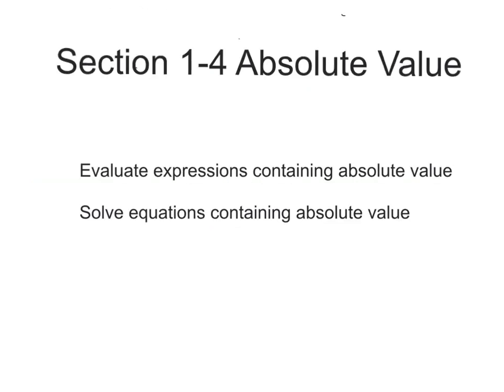Now you should be able to evaluate expressions containing absolute value by substituting in the value, simplifying what's in the absolute value bars, taking the positive value of that because it's the distance from 0, and then continuing to simplify. You should also be able to solve equations containing absolute values by first isolating the portion with the absolute value, then splitting into the two cases where a equals b and a equals negative b, solving each, and substituting your solutions back in to check. Sometimes we may have two solutions, sometimes no solutions, and sometimes one solution.